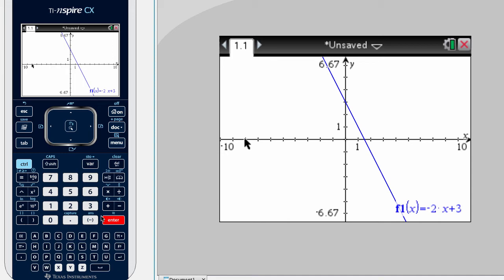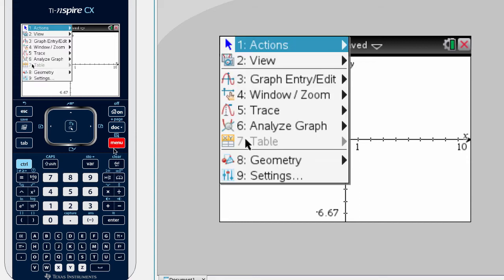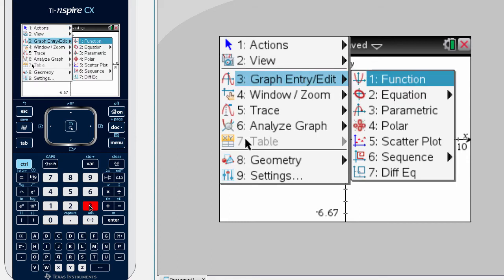Now let's undo this, and see how you can do this very same thing using the menus. So again, we're going to select menu, and number 3, which is graph entry exit, and number 1, function.